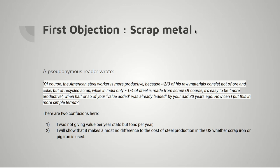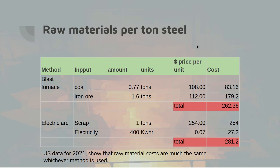Firstly, I was not giving value per year statistics but tonnes per year statistics, so value added doesn't enter into the argument — except insofar as when steel is sold on the world market there's a world market value for steel. I'll next show that it makes almost no difference to steel production in the USA whether it's produced by an electric arc furnace using scrap steel, or by a blast furnace whose ultimate inputs are coal and iron ore. So let's look at the two methods of production in the USA.